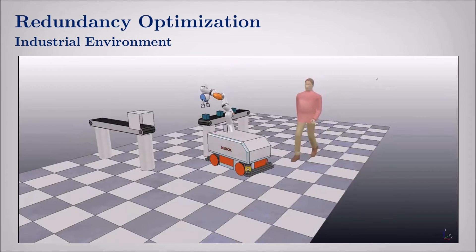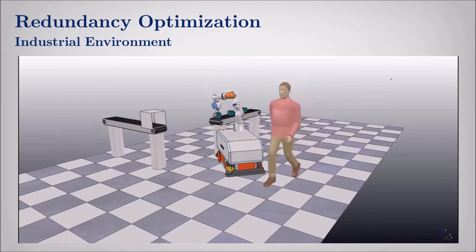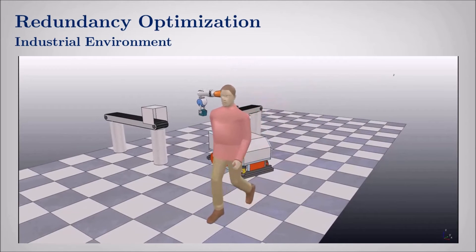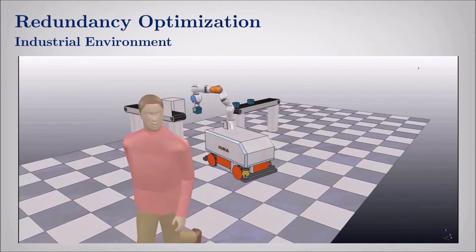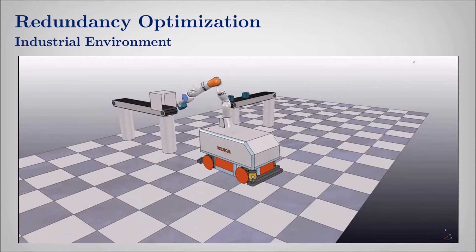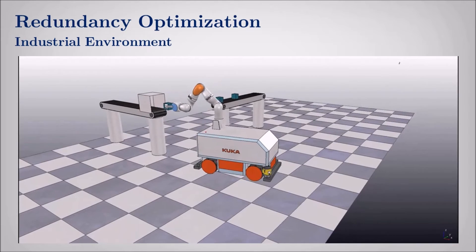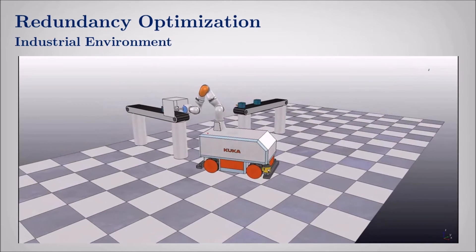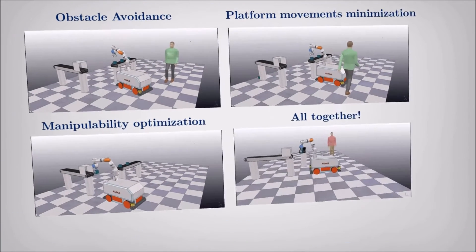Thanks to our developments, while performing its primary industrial task, a mobile manipulator can avoid fixed and moving obstacles without interrupting its job, minimize the mobile platform movements, optimize the robotic arm dexterity, and avoid joint limits and singular configurations.